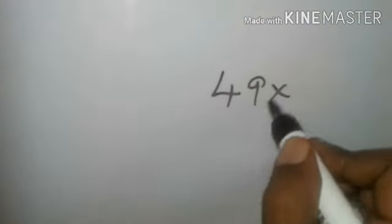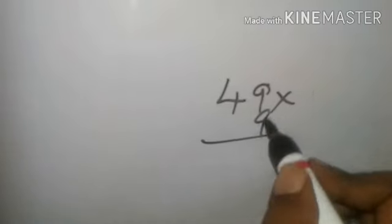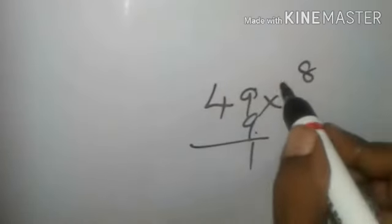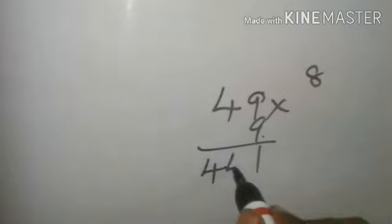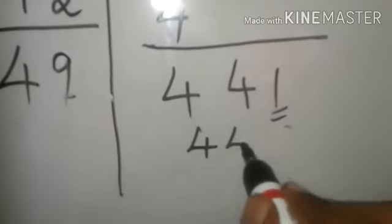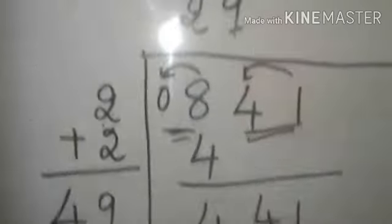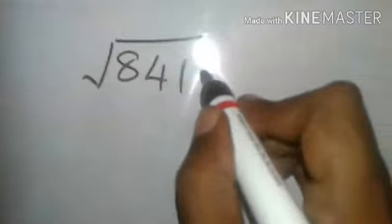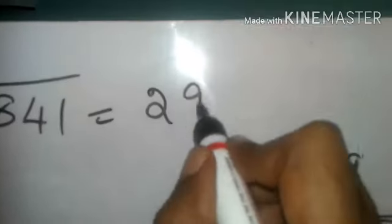49 into 9. Nine into nine is 81, eight remainder. Nine fours is 36 plus 8 is 44. You have here 441. So 9, 9, 441. So your answer is 29. So square root of 841 is 29.